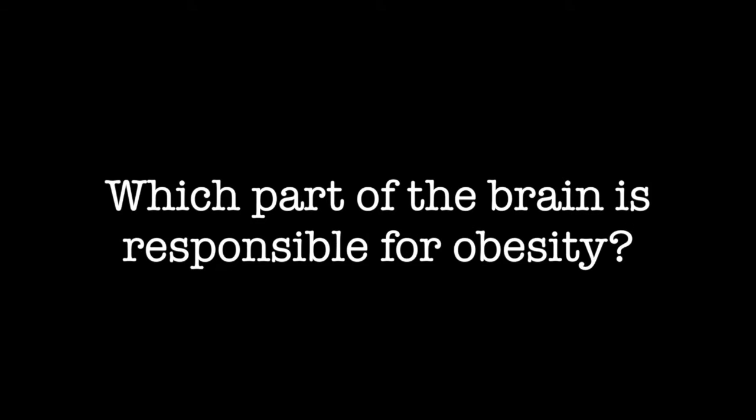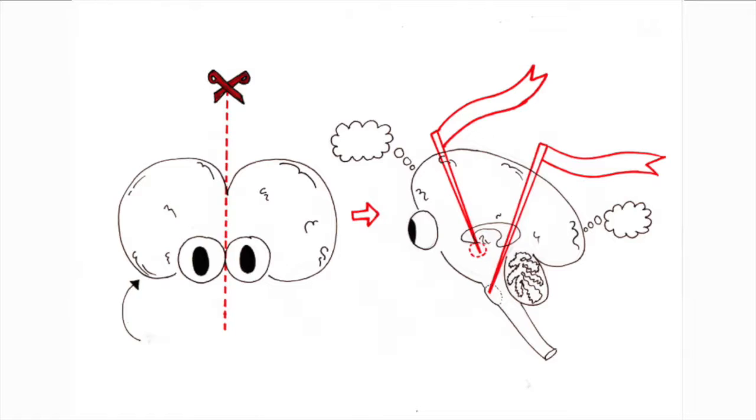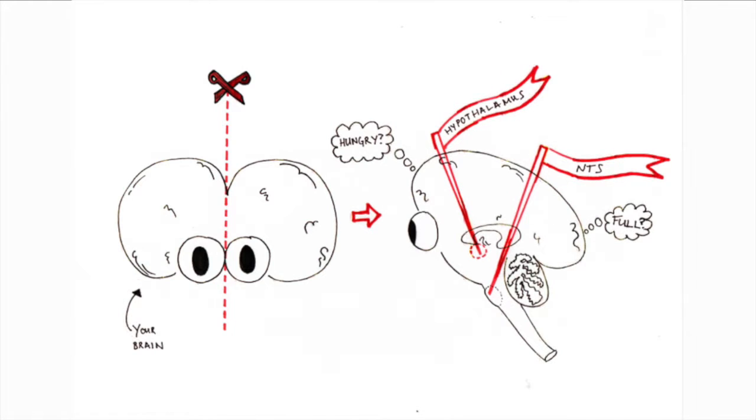Which part of the brain is responsible for obesity? Many people think it's our willpower and that obese patients have a lack of moral fibre. However, it's actually the subcortical areas of the brain, such as the hypothalamus and nucleus tractus solitarius, that sit at the bottom of the brain and control our vital functions, including hunger and fullness.